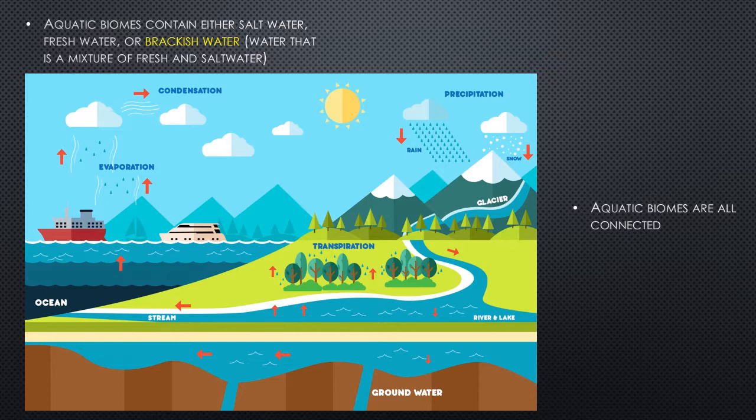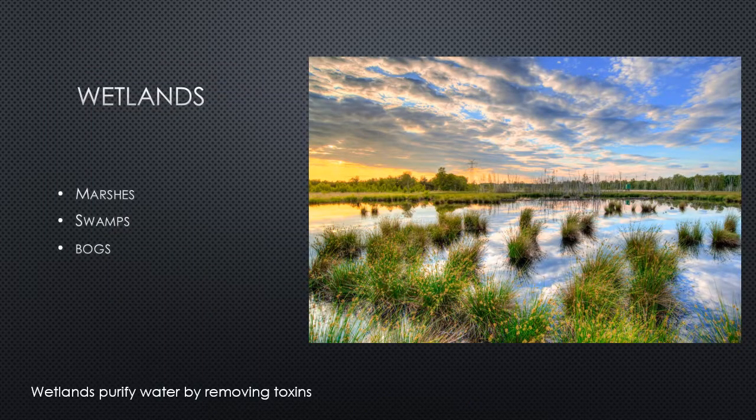Let's start with wetlands. Wetlands are subdivided into marshes, swamps, and bogs. Wetlands are really significant because they purify the water by removing toxins based on the type of soil present, and the plants filter out toxins as well, playing a crucial role for the whole earth.